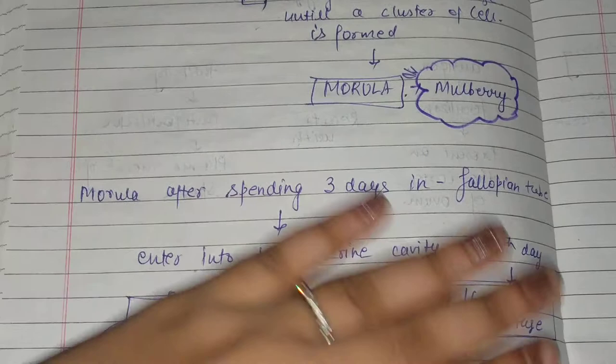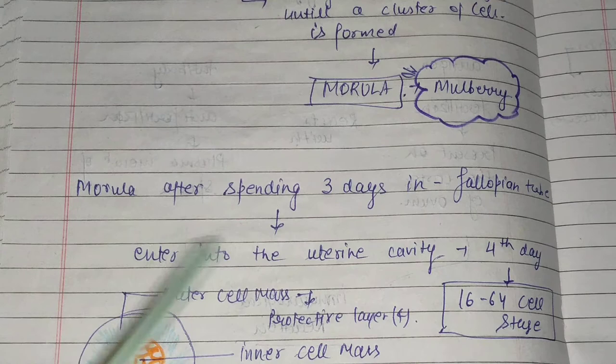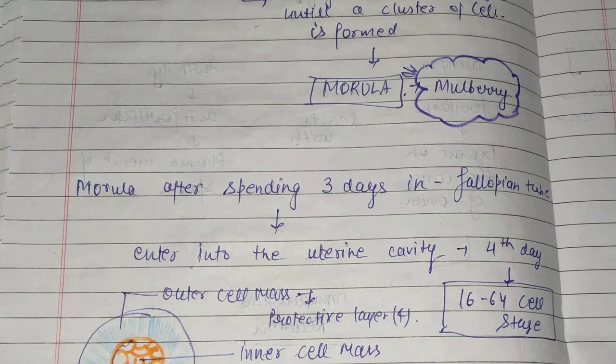Next, the Morola enters into the uterine cavity. At the 4th day it enters the uterine cavity, and by this point it has reached the 64-cell stage.